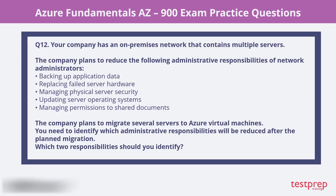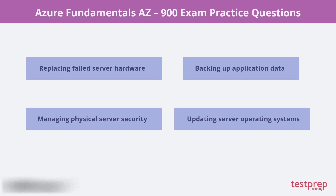Question 12. Your company has an on-premises network that contains multiple servers. The company plans to reduce the following administrative responsibilities of network administrators: backing up application data, replacing failed server hardware, managing physical server security, updating server operating systems, managing permissions to shared documents. The company plans to migrate several servers to Azure Virtual Machines. You need to identify which two administrative responsibilities will be reduced after the planned migration. The correct options are replacing failed server hardware and managing physical server security.